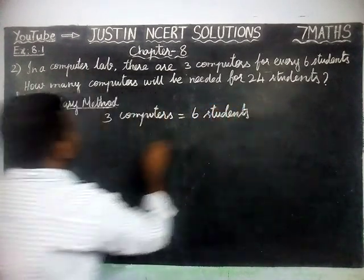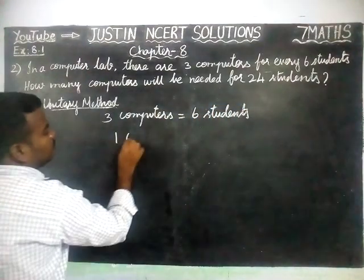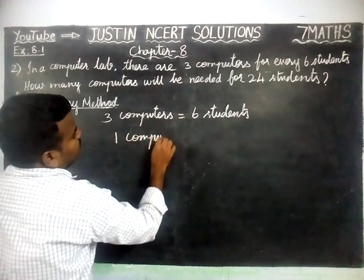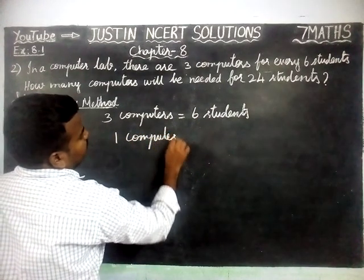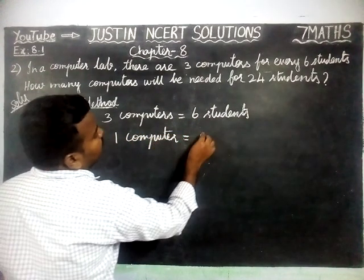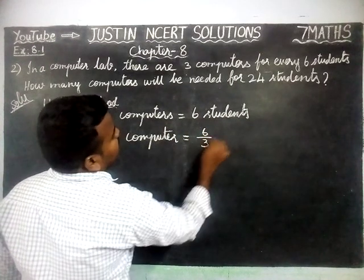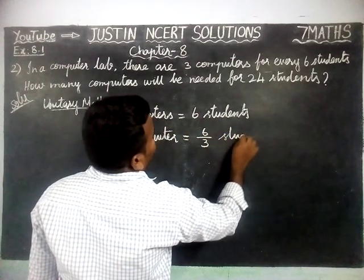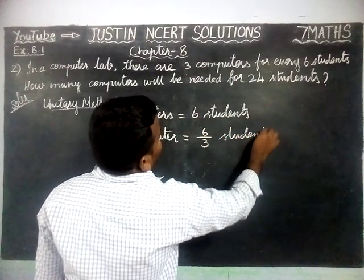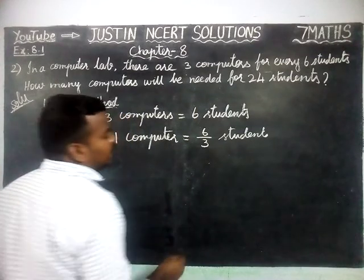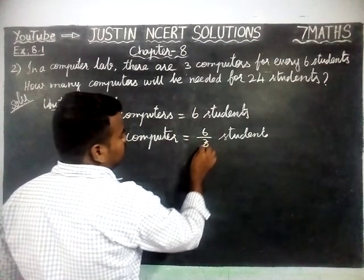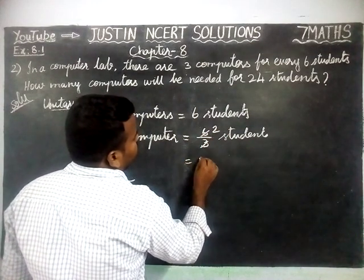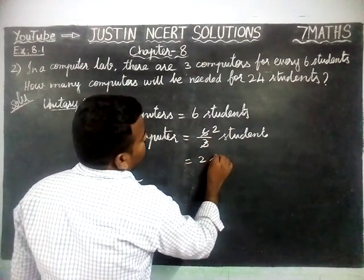For 1 computer, 1 computer is equal to 6 divided by 3 students. When we simplify, 6 divided by 3 equals 2. So for 1 computer, there are 2 students.